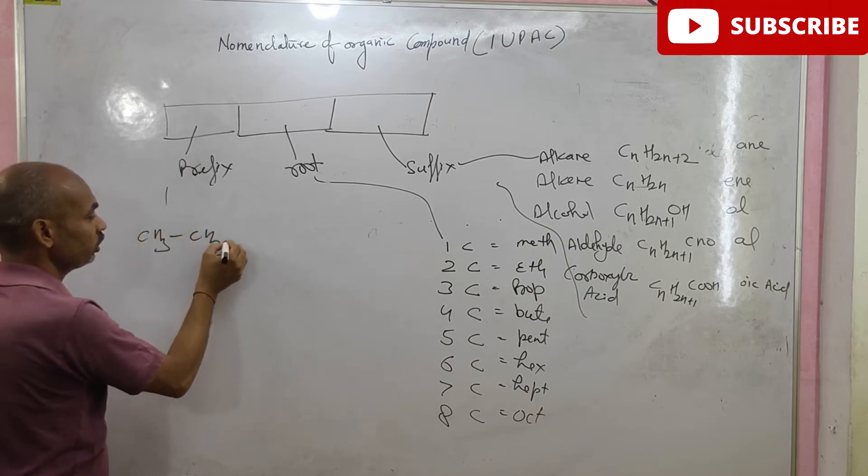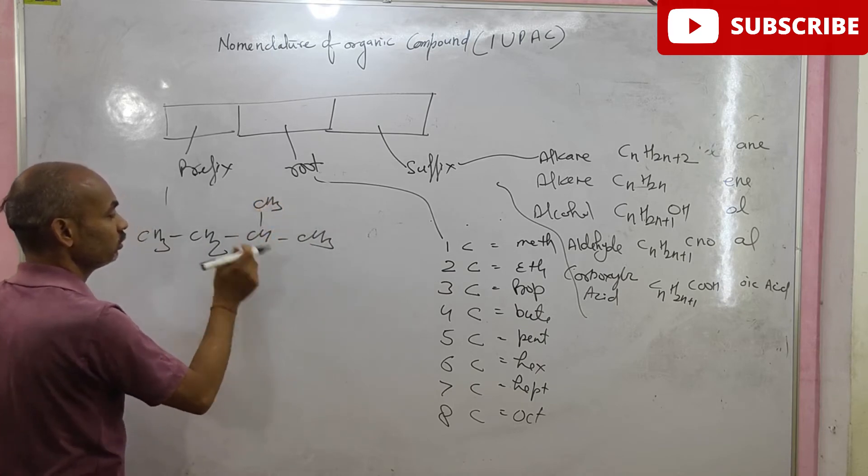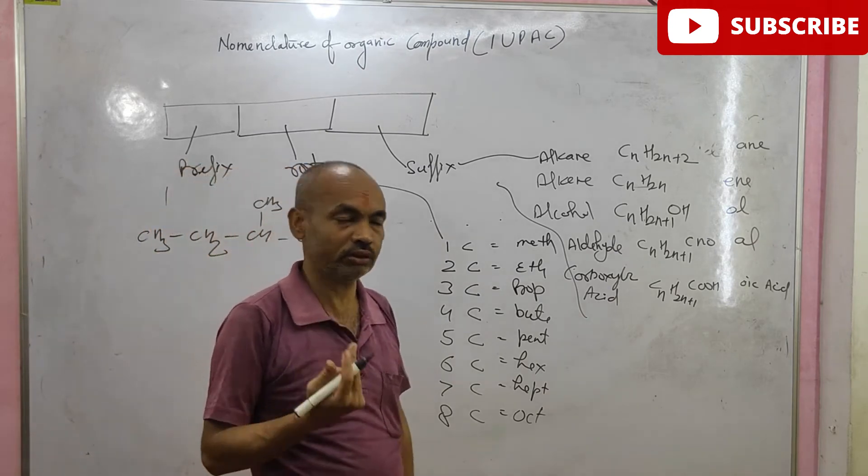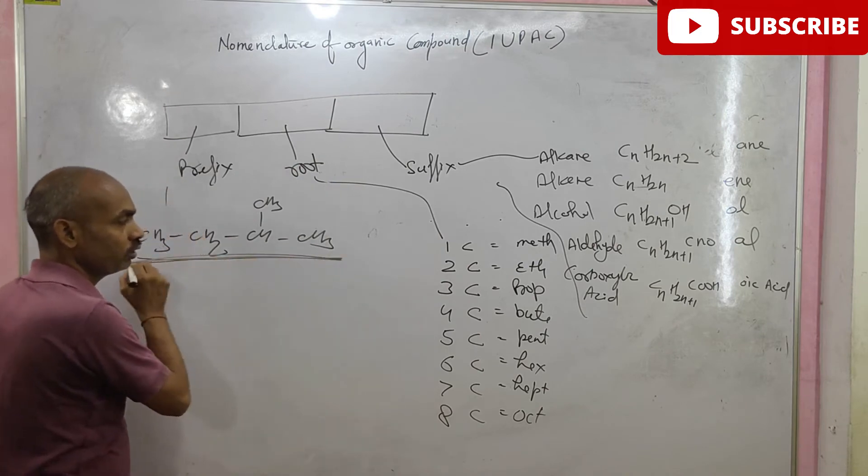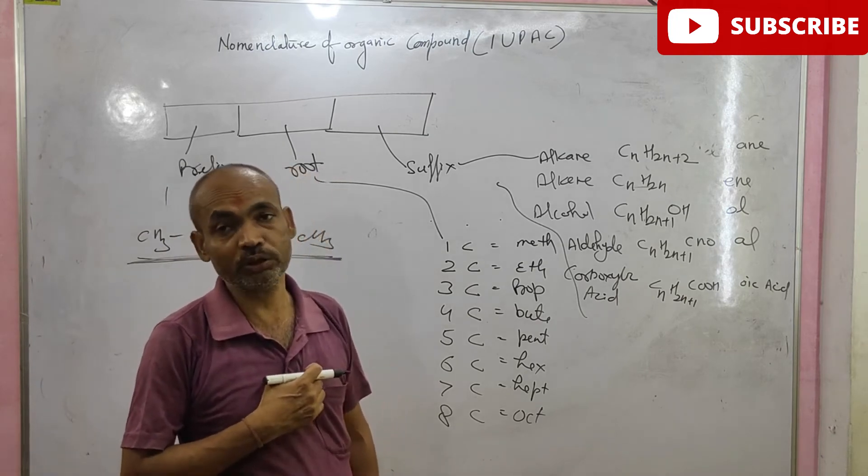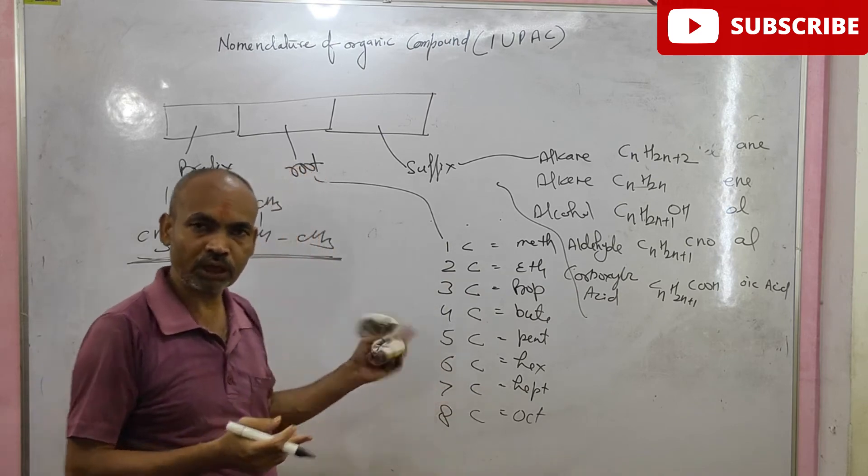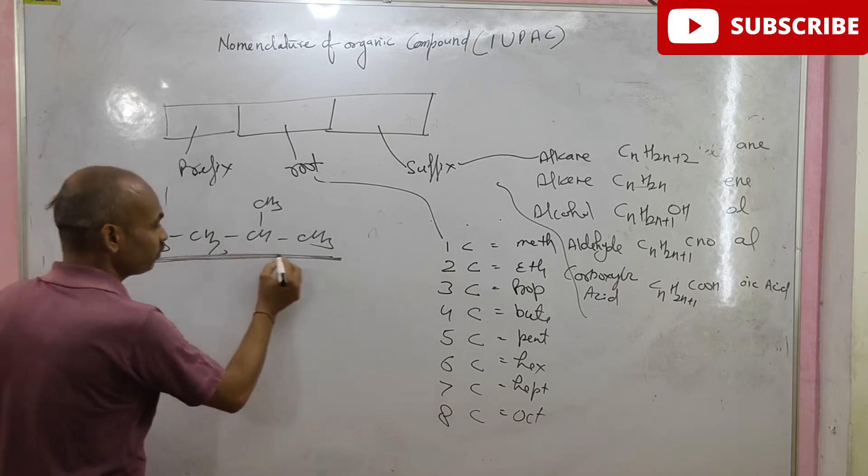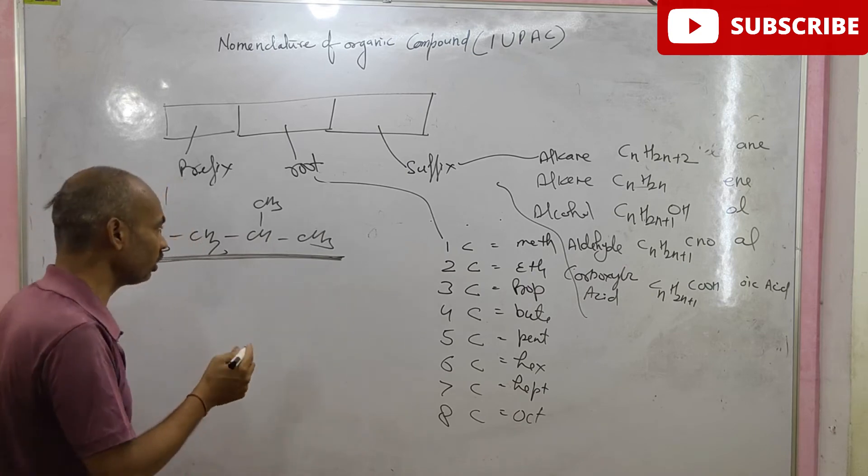CH3, CH2, CH2, CH3, CH3. First of all, we will find out the longest chain. We know that this is the longest chain. It is not necessary that longest chain should be straight. Longest chain may be branch, cyclic or straight. After finding the longest chain, we should start the numbering.